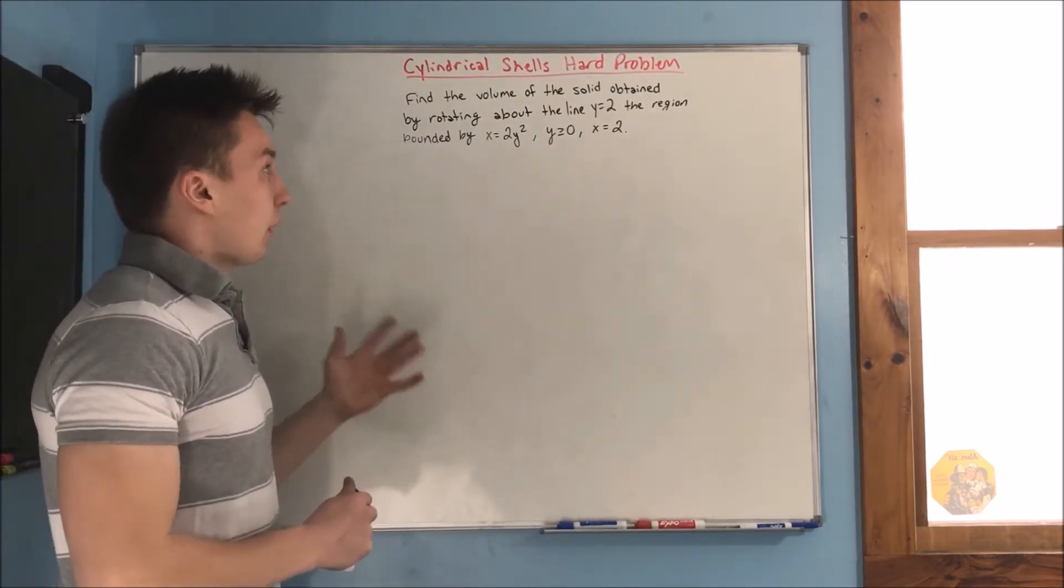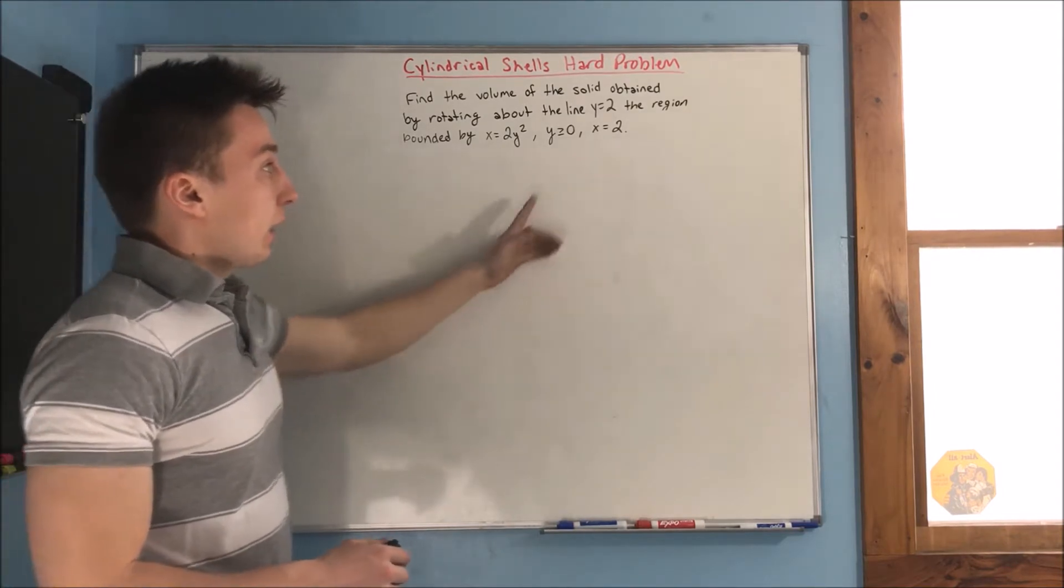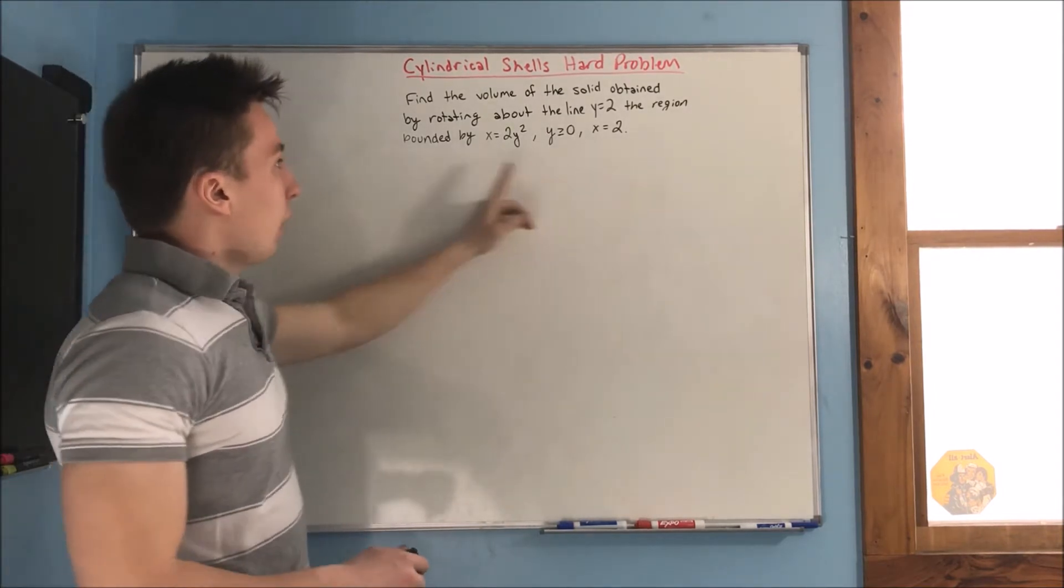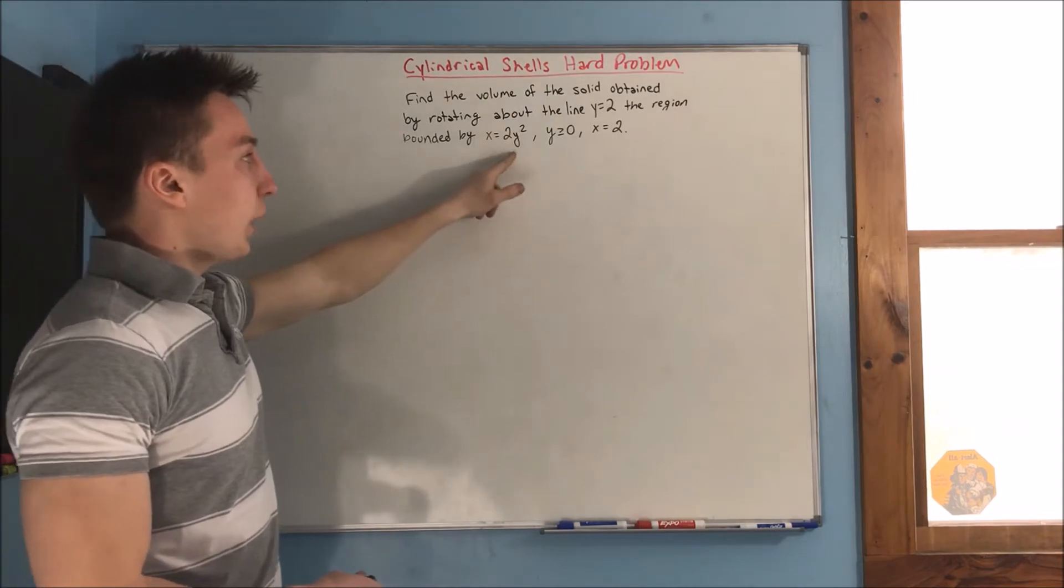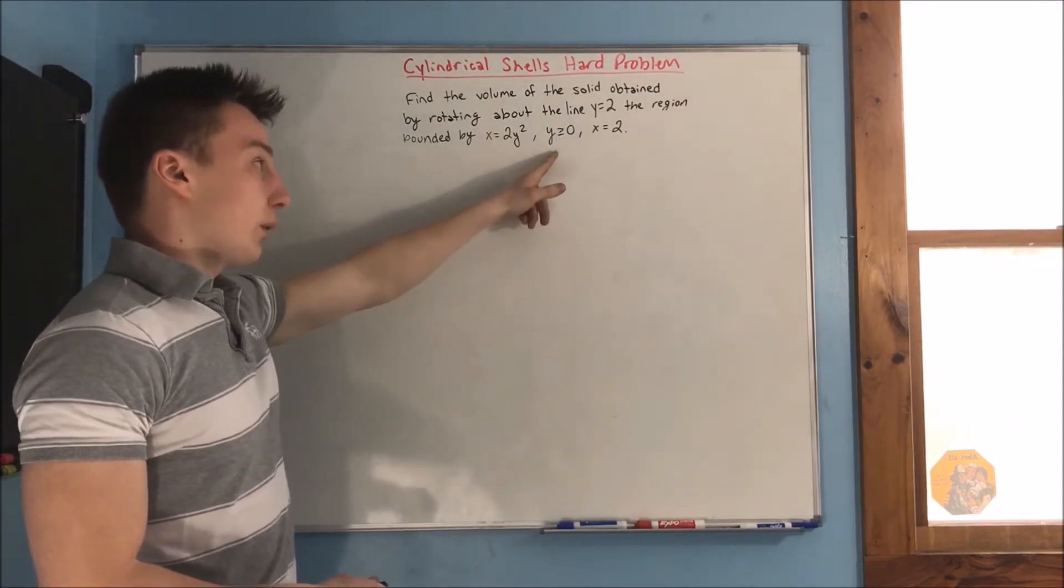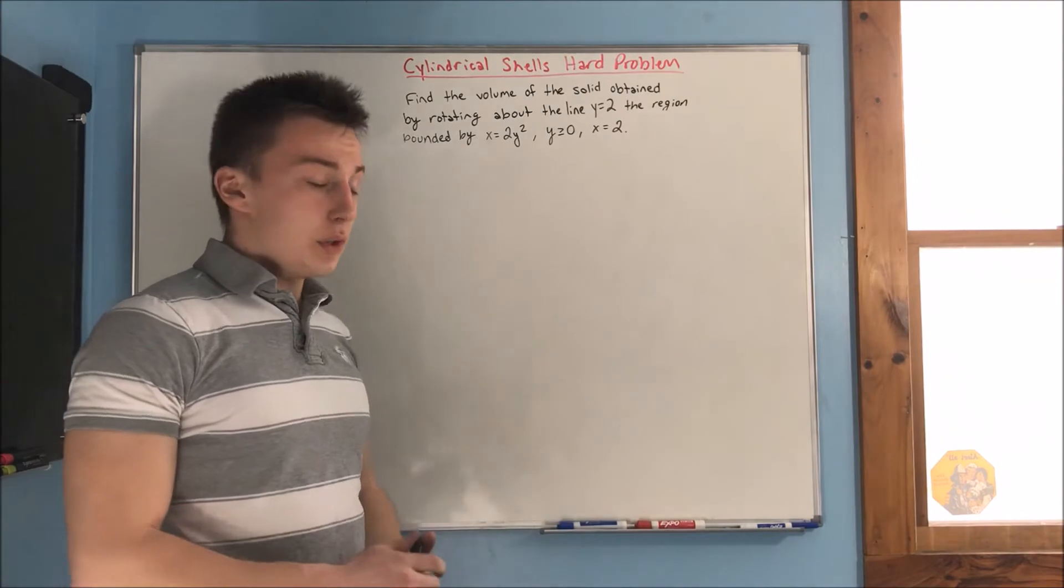So, find the volume of the solid obtained by rotating the line about the line y equals 2, the region bounded by x equals 2y squared, y is greater than or equal to 0, and x equals 2.